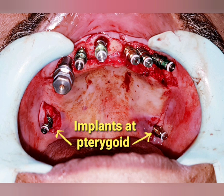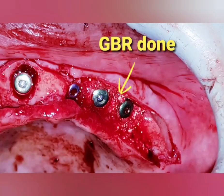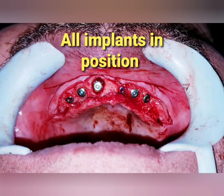After doing the same on the other side, we placed two pterygoid implants and six implants in the anterior region — three implants on each quadrant. This picture shows the bone grafting: this is guided bone regeneration using alloplastic material to cover the implant surface, especially in the defected bone areas. This picture shows all eight implants in position.